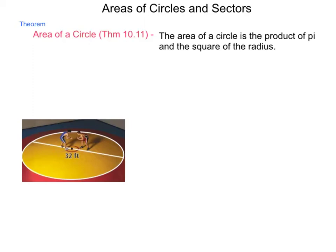the area of a circle is the product of pi and the square of the radius. In other words, in formulaic form, A equals pi r squared. So, how can we use this?